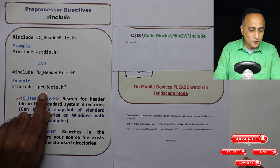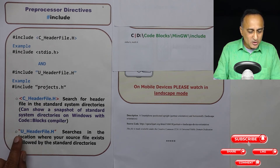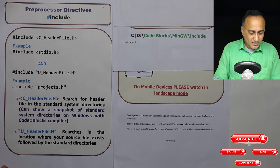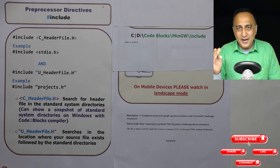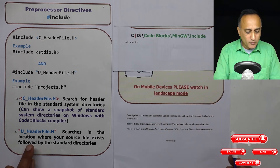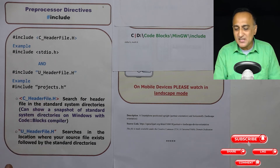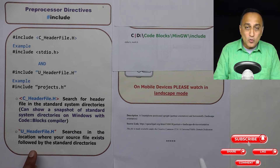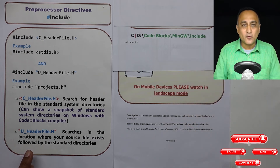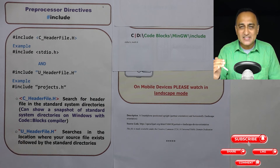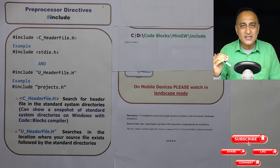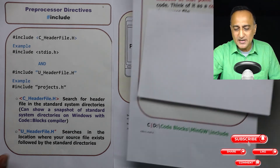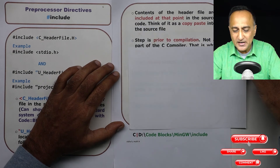Suppose you create a user-defined header file called projects.h — that means your team members create this — so you will include it like hash include projects.h in double quotes. Suppose your source program is hello.c and it exists in C:\CodeBlocks. What it will do is search for projects.h in C:\CodeBlocks folder first. Only if it doesn't find it there, then it will go to the include folder. So when it's in double quotes, it indicates that this particular header file has been created by you, whereas the angular braces indicate the header file is supplied by the C language.